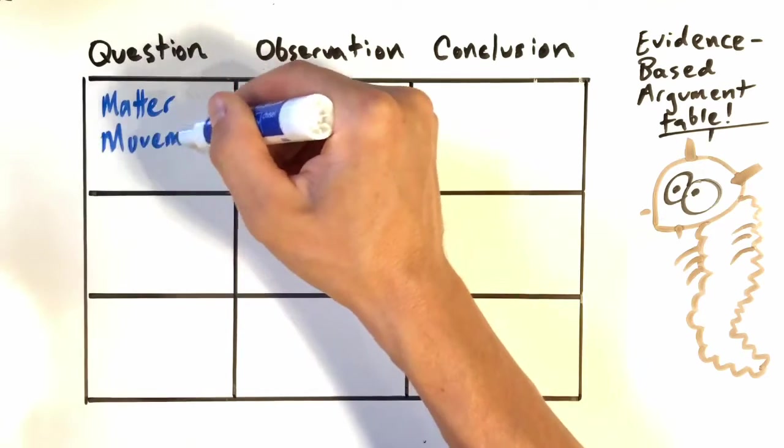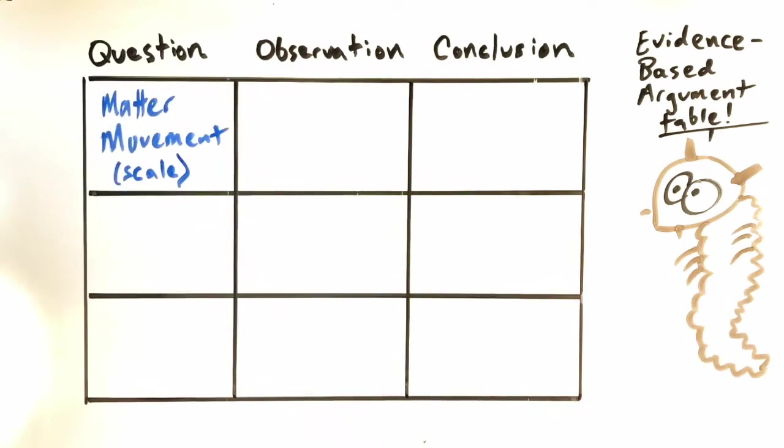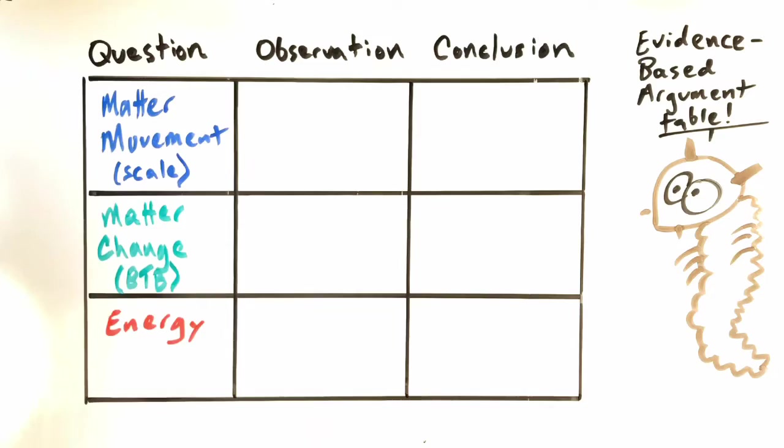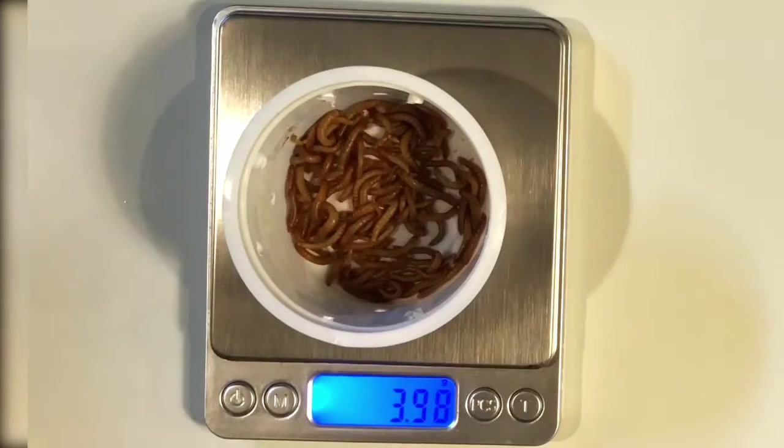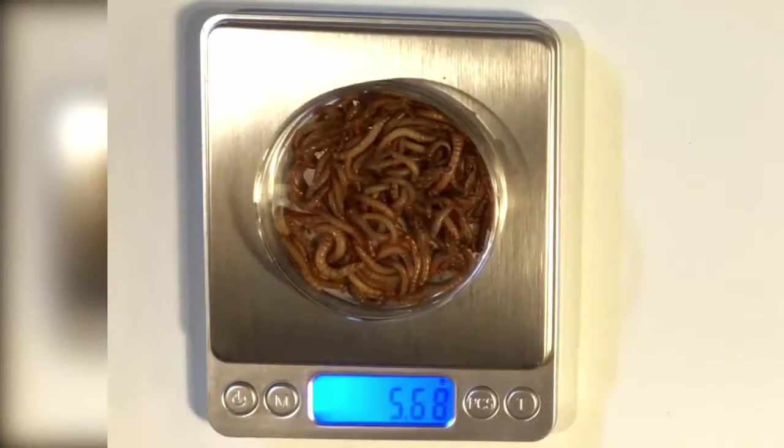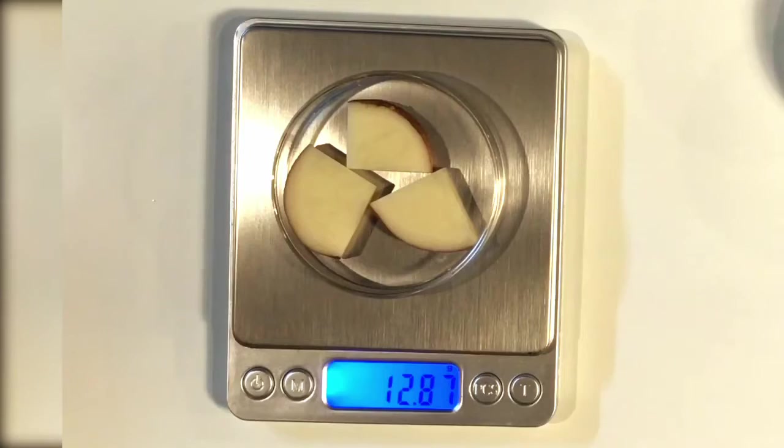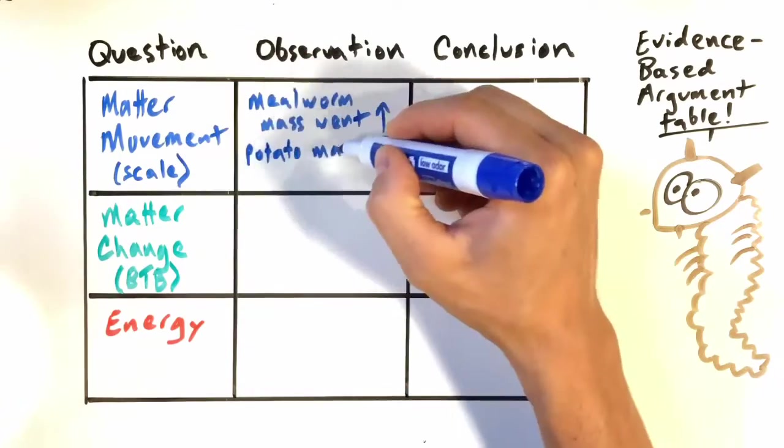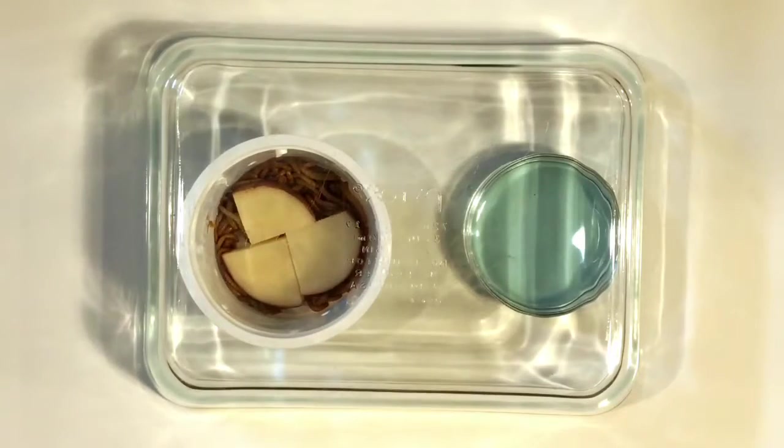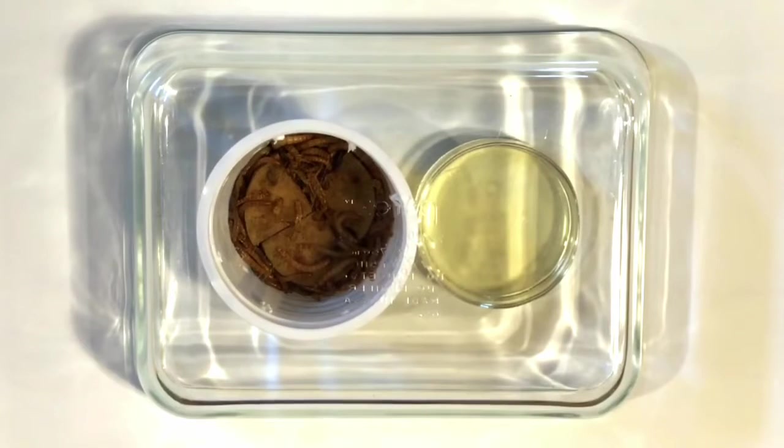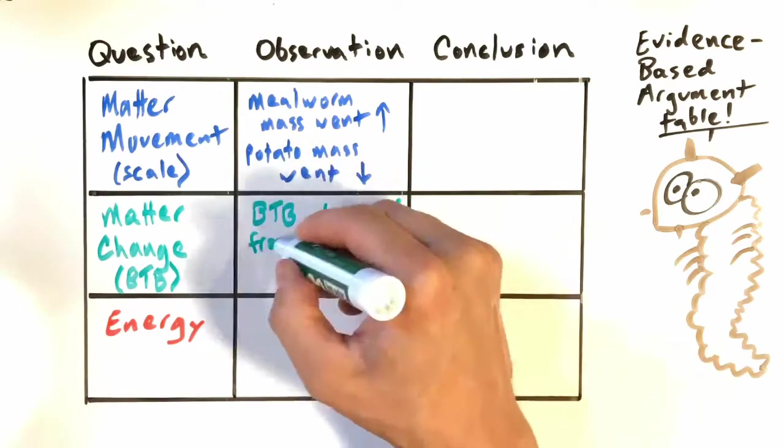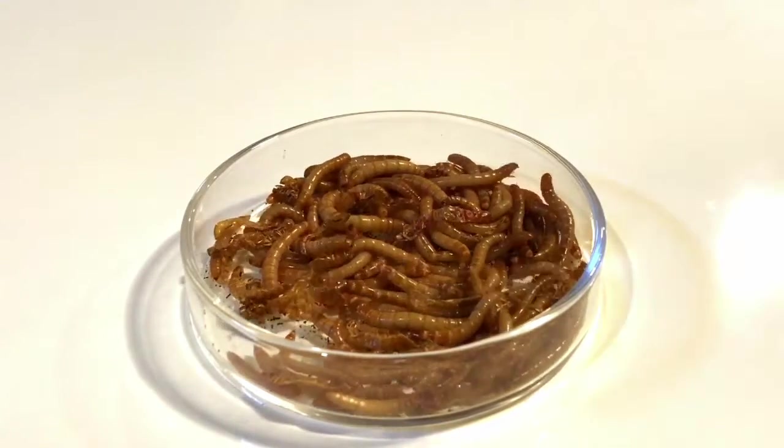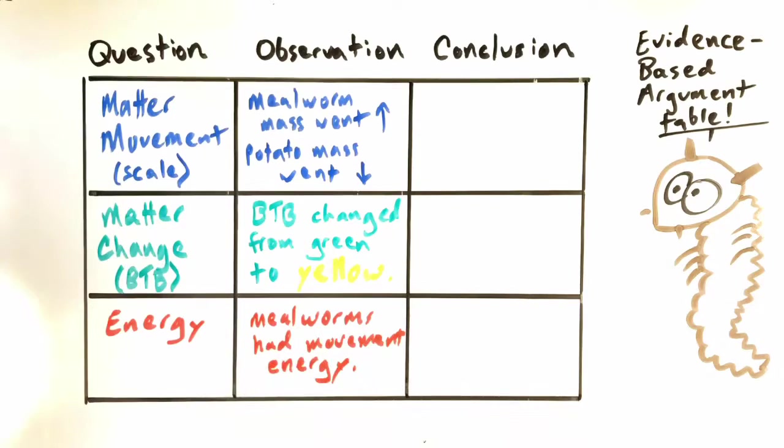As far as the matter movement question, we saw that the mass of the mealworms increased, and at the same time, the mass of the potatoes decreased. As far as the matter change question, we saw that the BTB changed from green to yellow, which means it must have become more acidic. And as far as the energy question, what we really observed was that the mealworms were moving. They had movement energy.